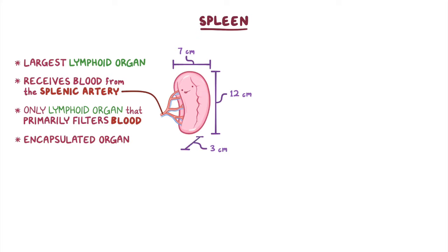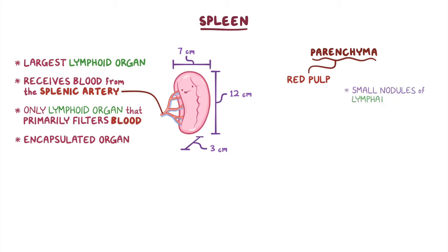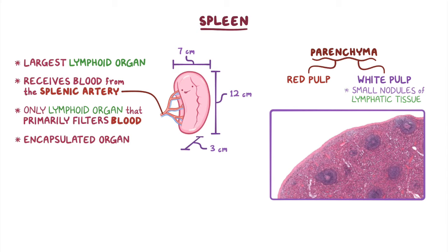The spleen's functional tissue, or parenchyma, consists of red pulp with small white nodules of lymphatic tissue scattered throughout called the white pulp. When looking at the spleen histologically after it's been stained with H&E, the red pulp is actually stained a combination of pink and purple, and the white pulp is stained dark purple because it contains a large number of basophilic nuclei.